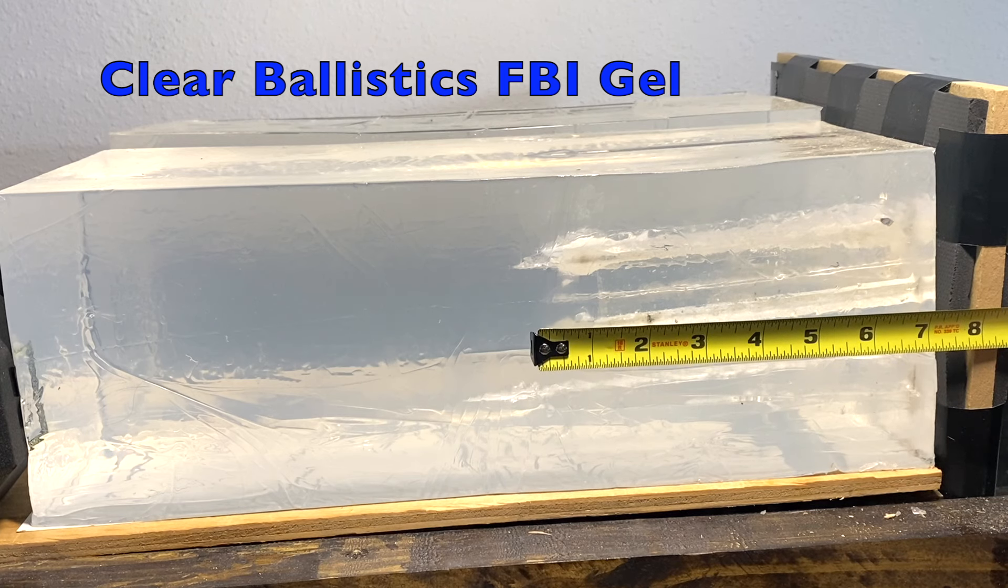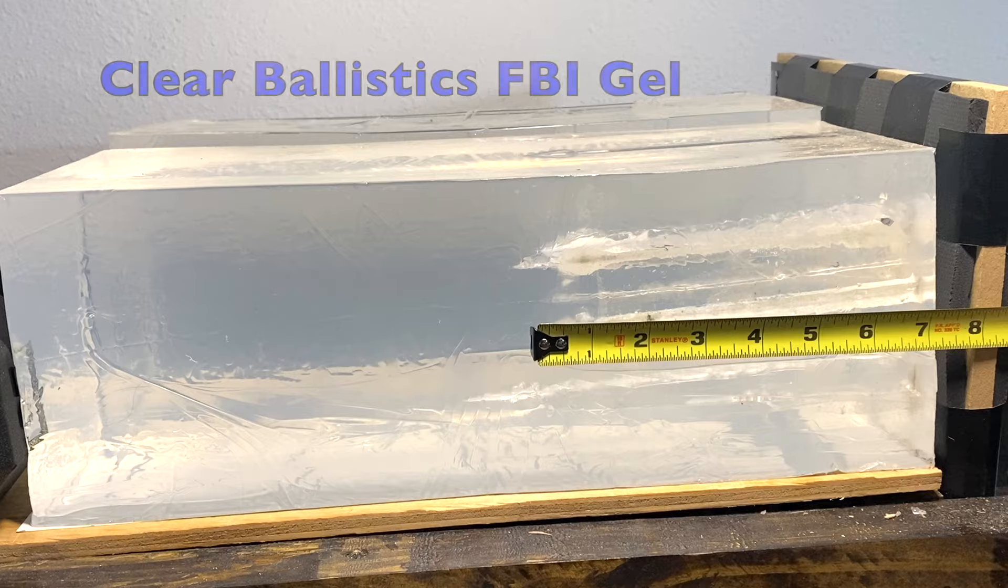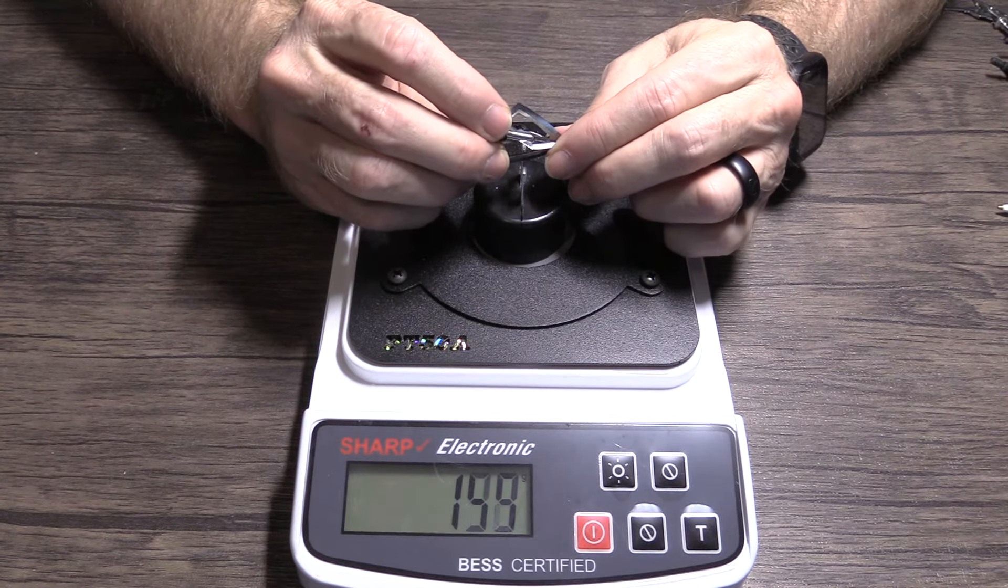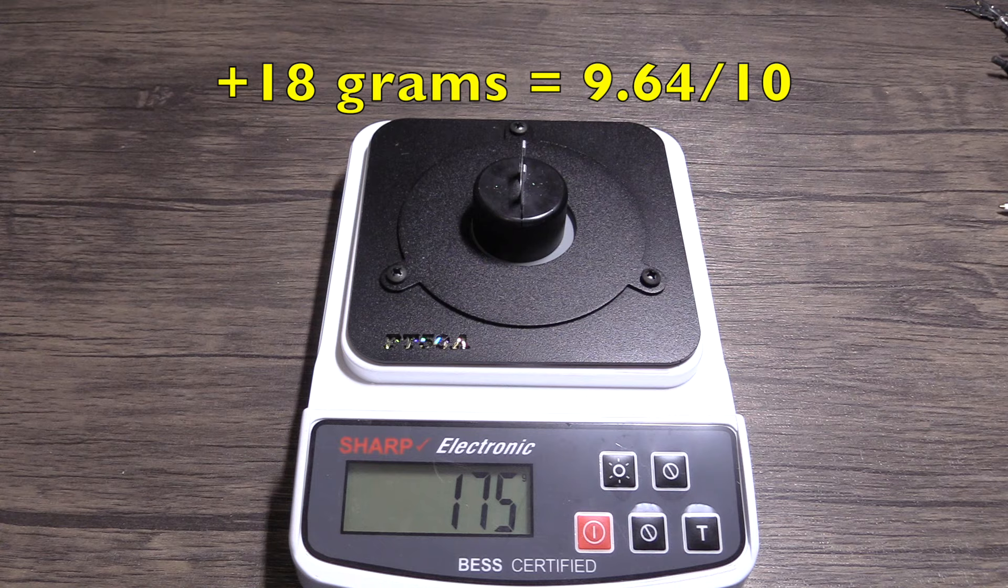I know it's hard to see from this angle, but the Revival penetrated eight and three-quarter inches. It took only an additional 18 grams of force to cut through the wire, which is a 9.64 on a 10-point scale.